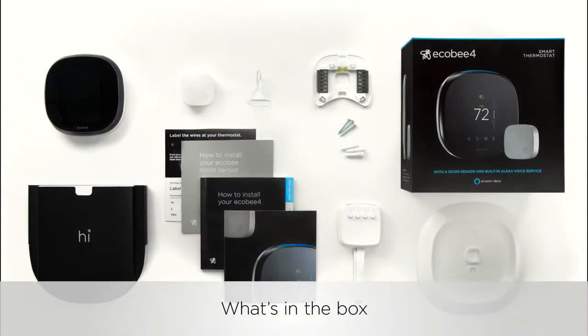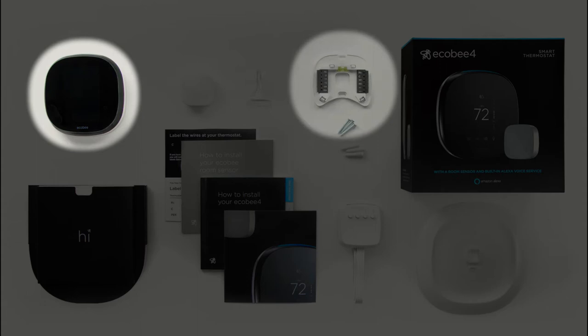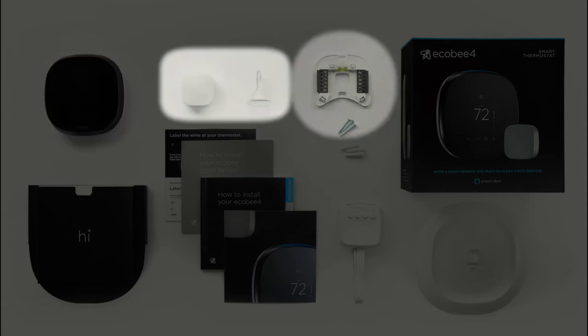Here's what's in the box. Your Ecobee 4 thermostat, the backplate, and a room sensor and stand.